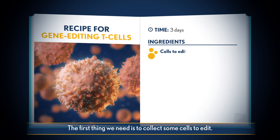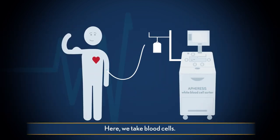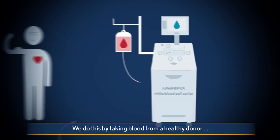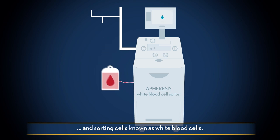The first thing we need is to collect some cells to edit. Here, we take blood cells. We do this by taking blood from a healthy donor and sorting cells known as white blood cells.